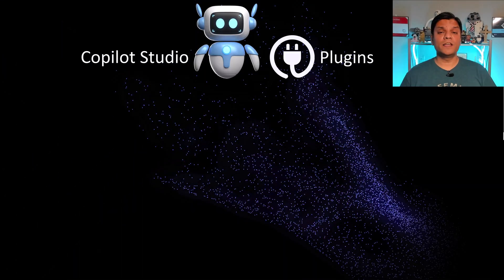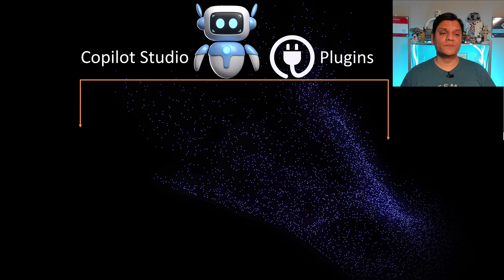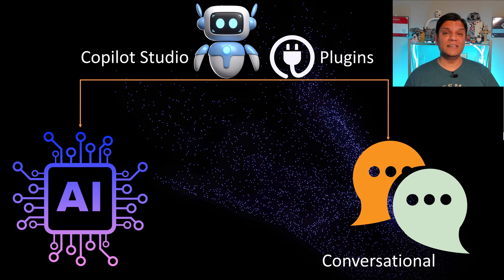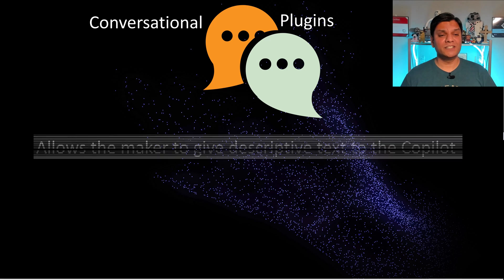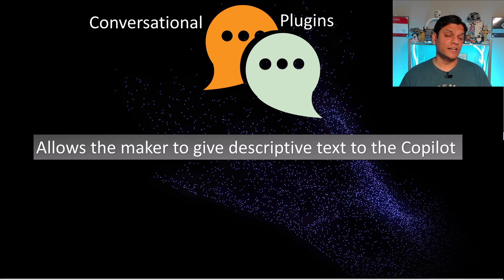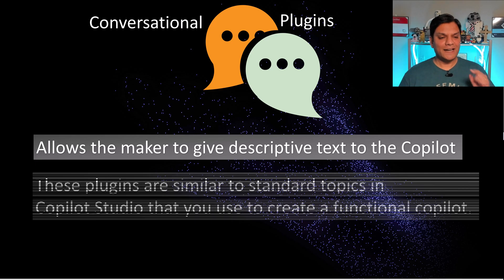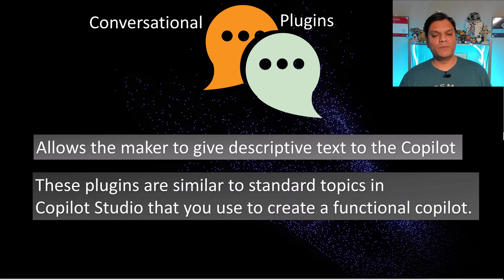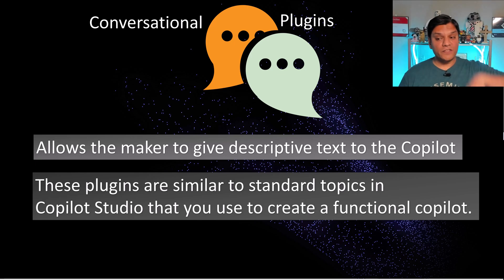When it comes to Co-Pilot Studio plugins, they're actually classified as two different types. One is the AI and the other one is the conversational. When it comes to conversational plugins, it allows the maker to give descriptive text to the Co-Pilot. This is very close to what we did back in Power Virtual Agents, so conversational plugins is really not a very new thing — there are enhancements, but these plugins are similar to the standard topics in Co-Pilot Studio.